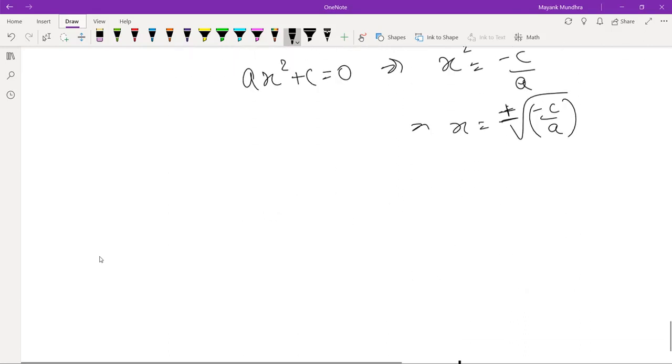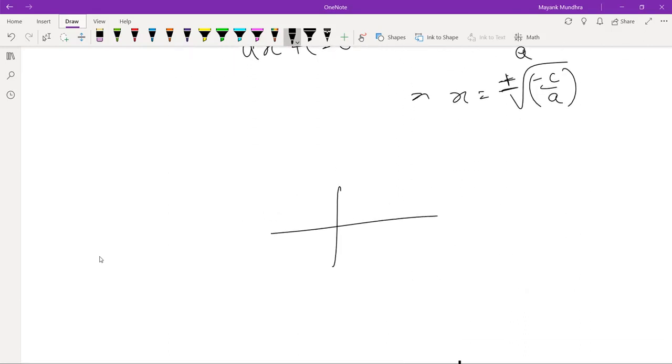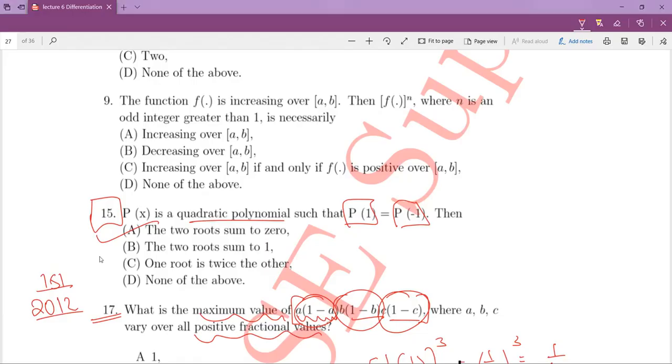Yes, it will be symmetric. This will be plus root minus C by A and this will be minus root minus C by A. So, this type of function, depending on A negative or C negative, but it will be symmetric about the y-axis. All quadratic polynomials are symmetric. Here, we have a polynomial which is symmetric about the y-axis.